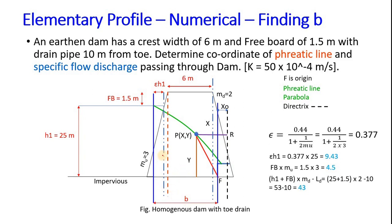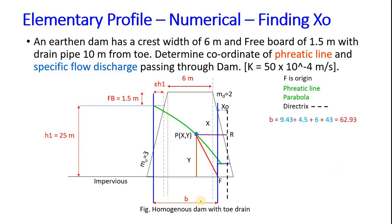Now the value of b is between these two blue lines. You can see here we have to find the value of b. This was our objective. Now value of b: 9.43 plus 4.5 plus 6 plus 43 equals 62.93. Now we got b.